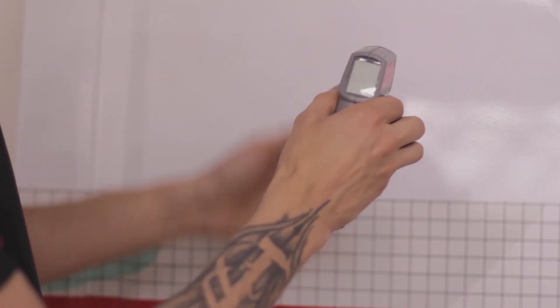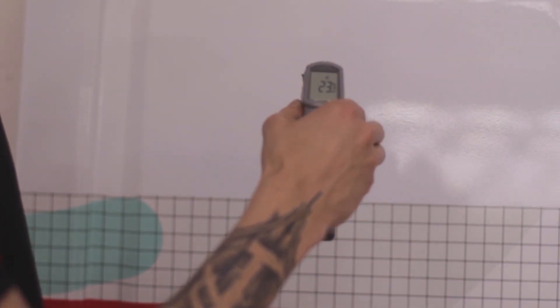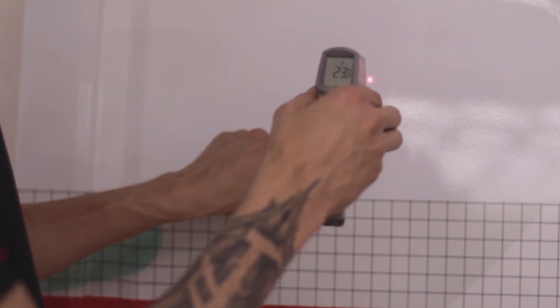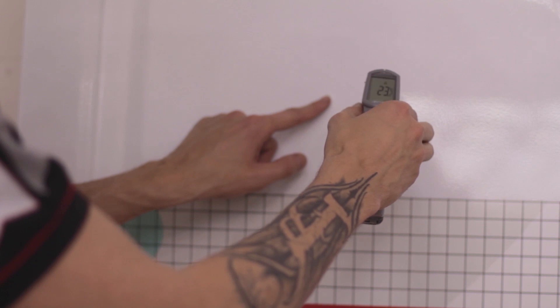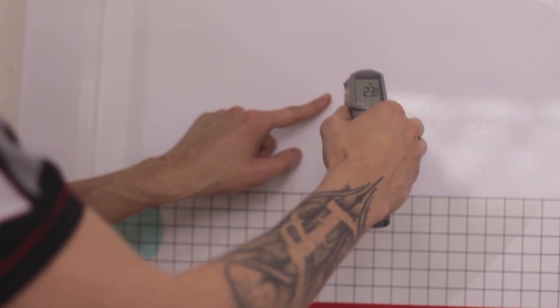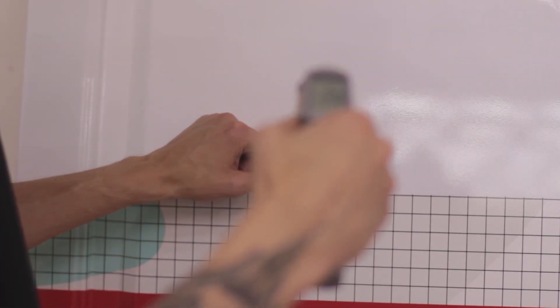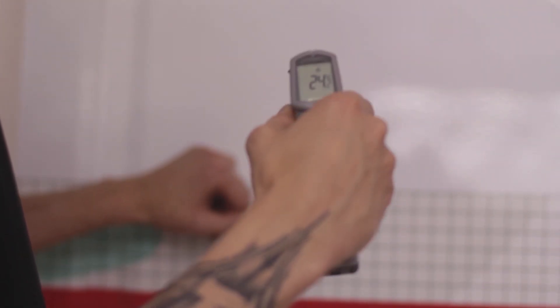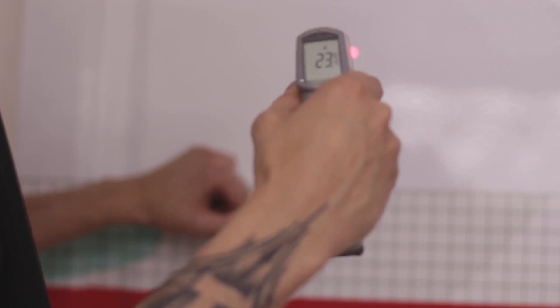If you go closer, the measured area is smaller and if you increase the distance, you measure a larger zone. The IR thermometer calculates the approximate temperature on the measured area and shows it on a display.